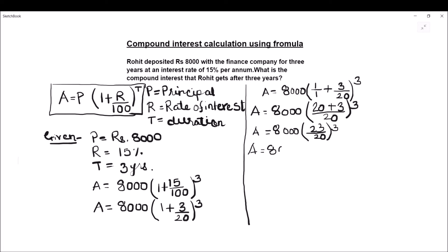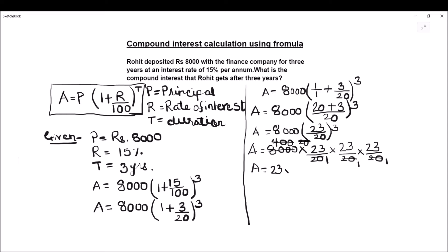Amount = 8000 times 23 divided by 20, and since it is cubed we write it three times: 23/20 times 23/20 times 23/20. We cancel 20 with 8000: 20 times 1 is 20 and 20 times 4 is 80, giving 400; then 20 times 1 is 20 and 20 times 20 is 400, and this 20 cancels with the 20 in the numerator. So we have 23 times 23 times 23 in the numerator and 1 in the denominator.